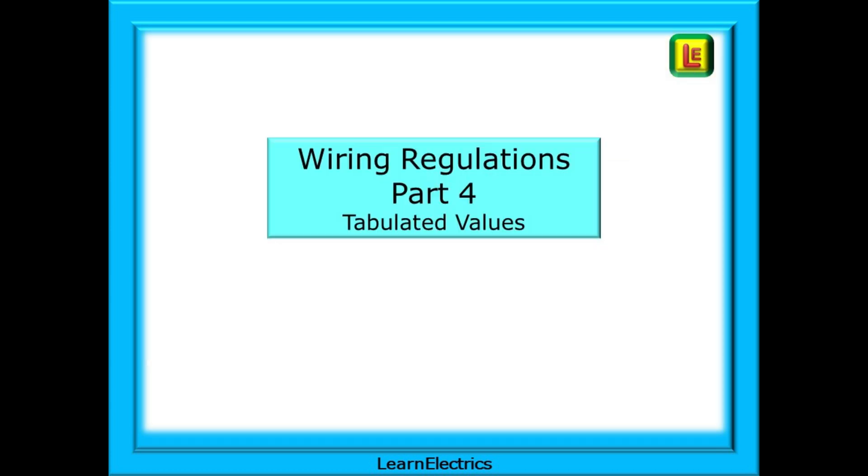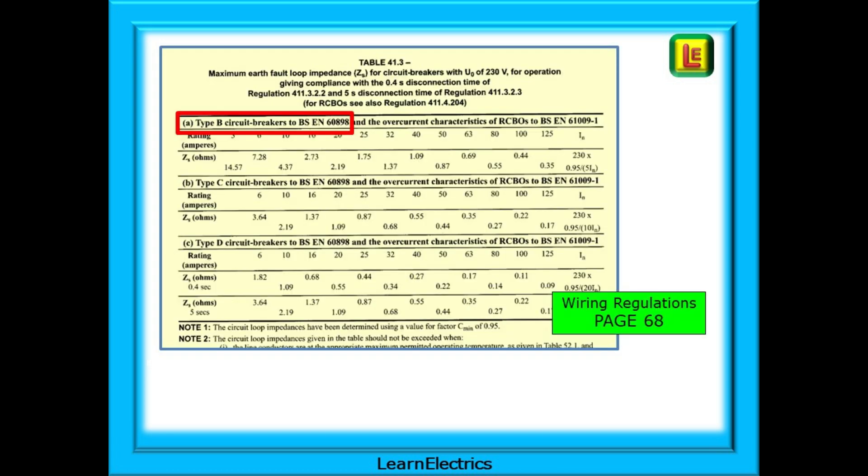Now that we know this, which is what the manufacturer's standards expect, let us look at part 4 of the wiring regulations where we will find tables of ZS values already calculated for us. We will find type B breakers on page 68 in table 41.3. This is the same table for circuit breakers and RCBOs.